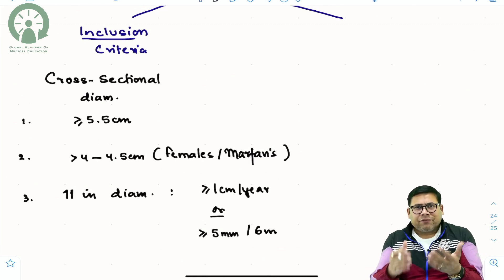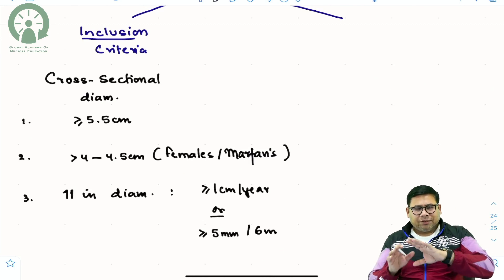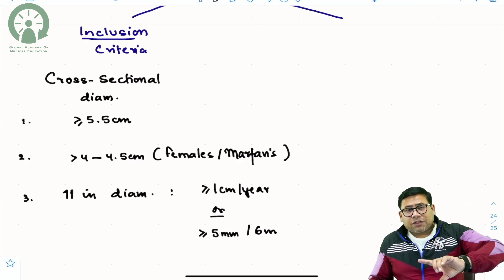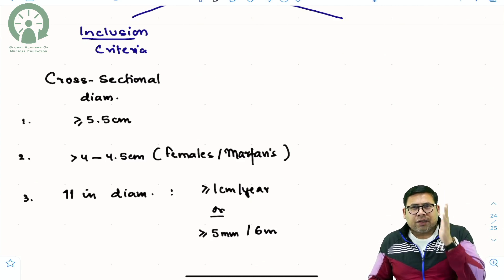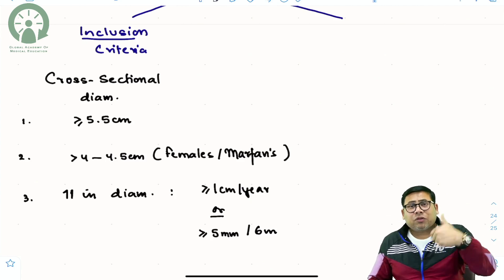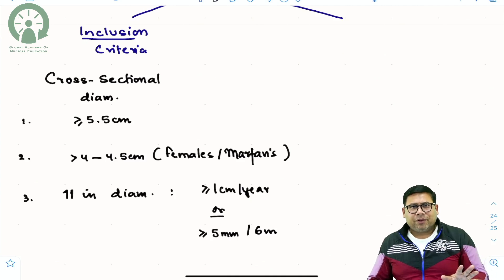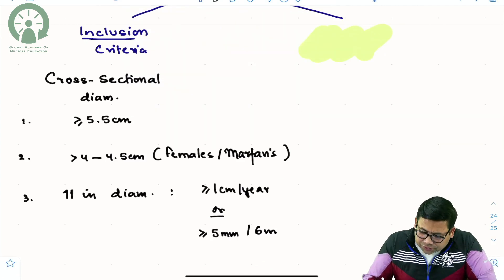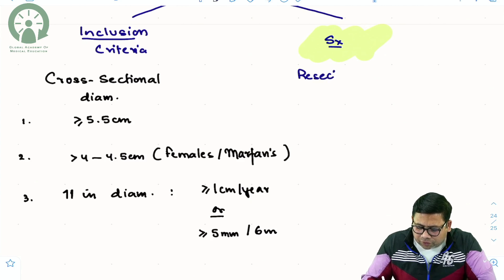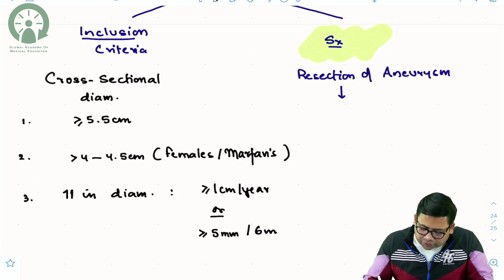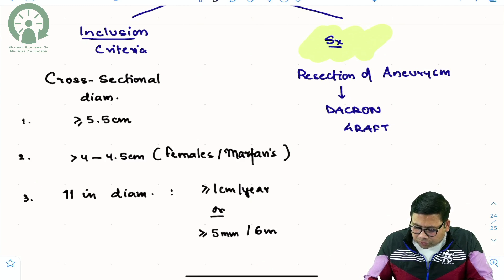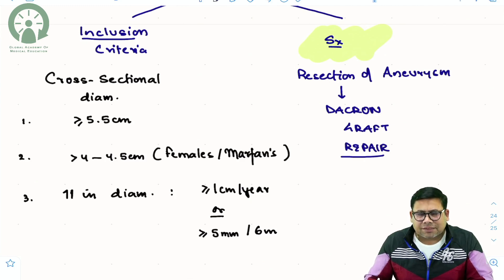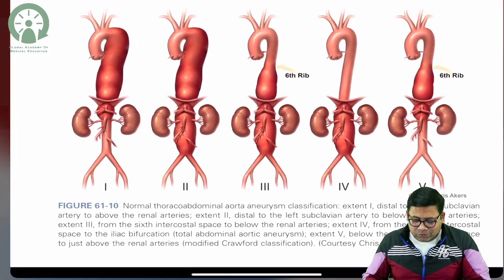For super-speciality considerations, the basic consensus is more than 5.5 cm. But specifically for thoracic aortic aneurysms — ascending aortic as well as arch aortic — if the diameter is more than 5 cm, you can also go for repair. The surgical procedure involves resection of the aneurysmal segment along with a Dacron graft repair.